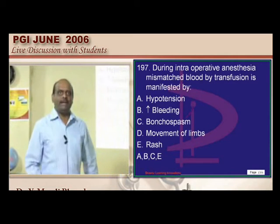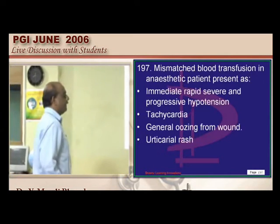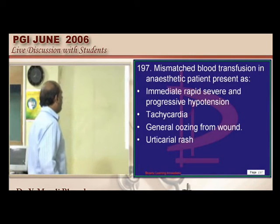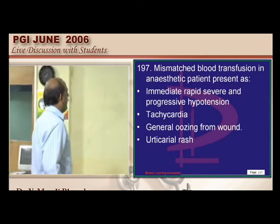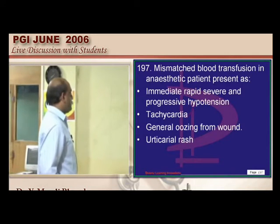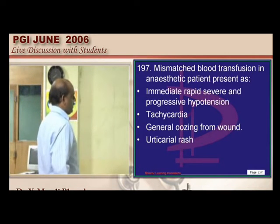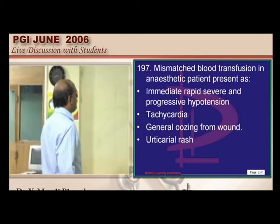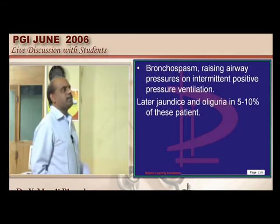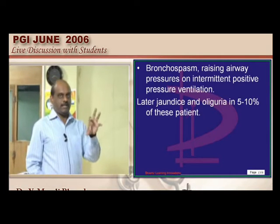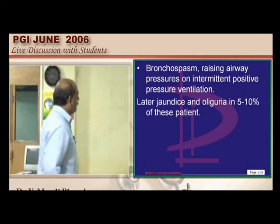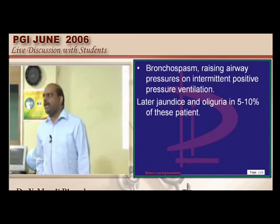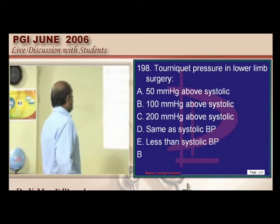If there is mismatched blood transfusion intraoperatively, it presents with bleeding from operative field areas, hypotension, and sometimes bronchospasm or rash. At a later point, renal dysfunction with oliguria, jaundice, urticarial rash, and bronchospasm due to anaphylaxis initiated by the mismatched transfusion are common presenting features.